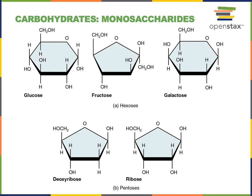Monosaccharides are the monomers of carbohydrates. Multiple monosaccharides will be linked together in order to form polysaccharides. Glucose is a major monosaccharide that we will see repeatedly because glucose is an important energy source used by cells in our body. Fructose is the sugar that gives a sweet flavor to fruit and honey. Galactose is one of the monosaccharides forming the milk sugar lactose.